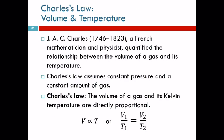Charles was a French mathematician and physicist, 1746 to 1823. By the way, I am not going to test you on these guys' names or which law belongs to whom. He looked at the relationship between the volume of a gas and its temperature. Charles's Law is that the volume of a gas and its Kelvin temperature are directly proportional. If one goes up, the other goes up. If one goes down, the other goes down.